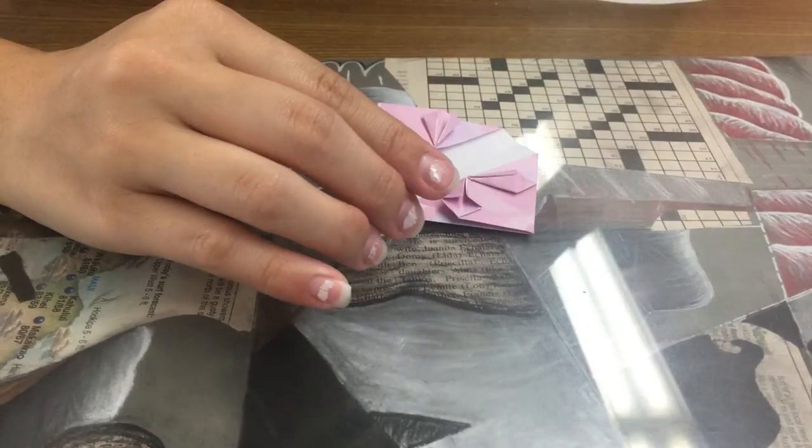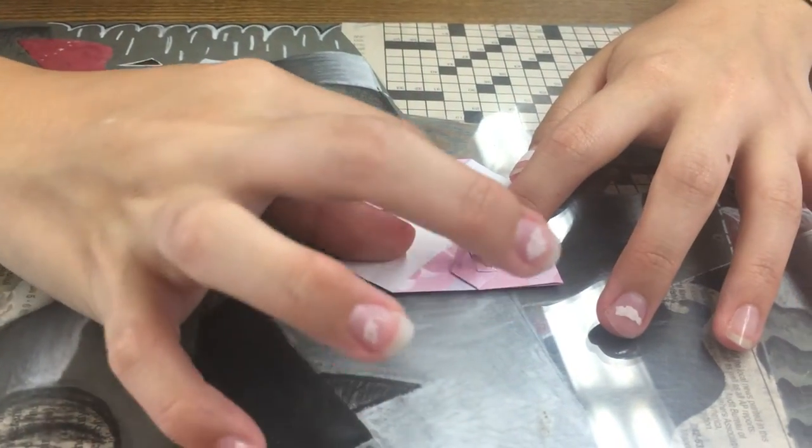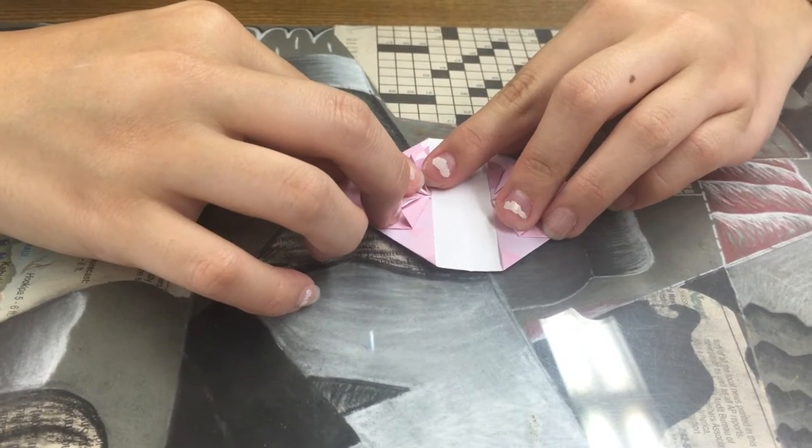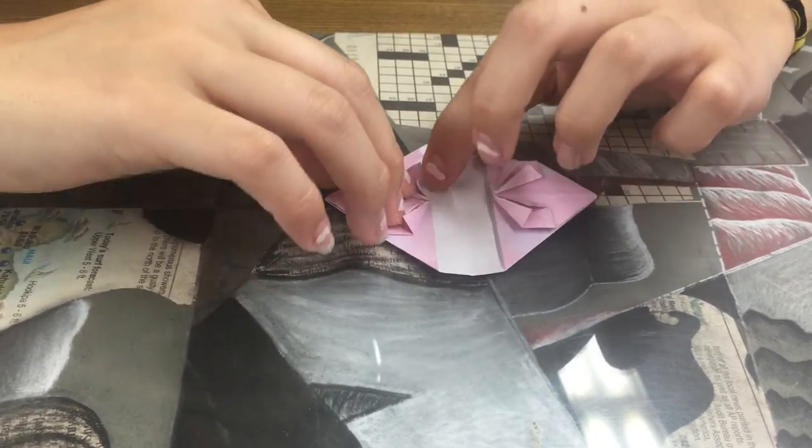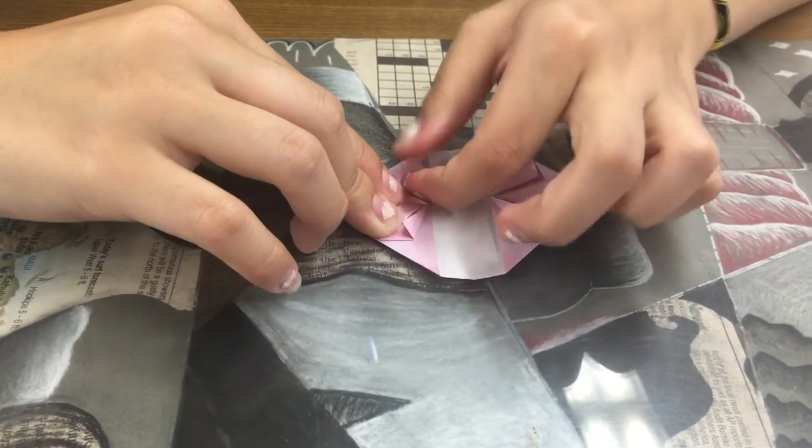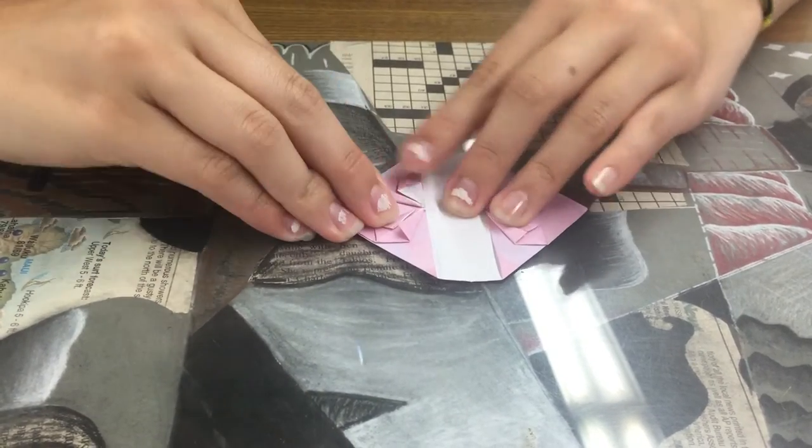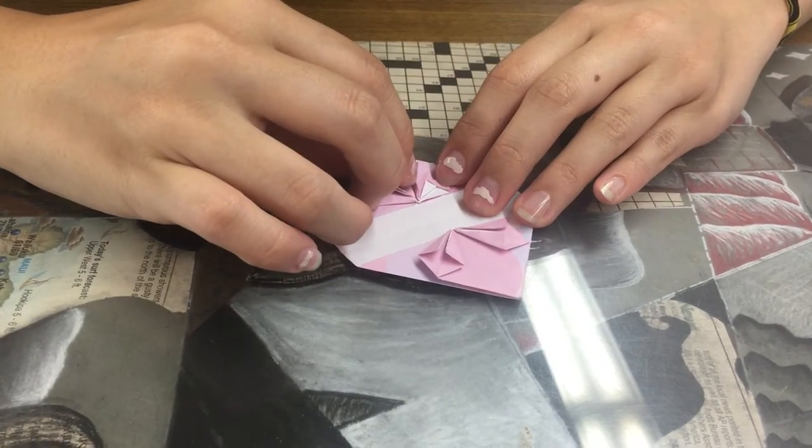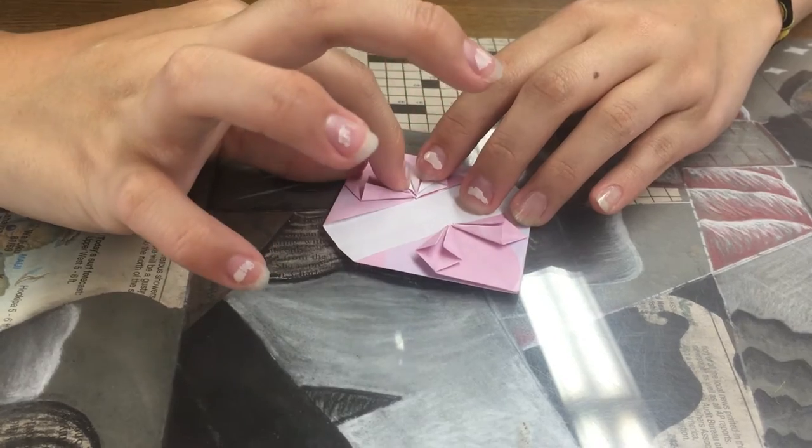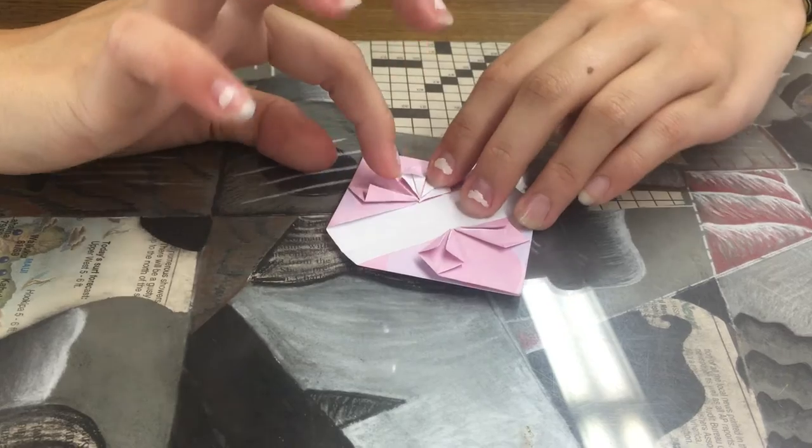And this is the last really hard part. So what we're going to do is you take the triangle you just folded and you're going to want to open it up because it makes a little pocket. Might take you a few tries, this is where fingernails are definitely very helpful. And you're just going to flatten the top part down so it makes a nice looking diamond shape.